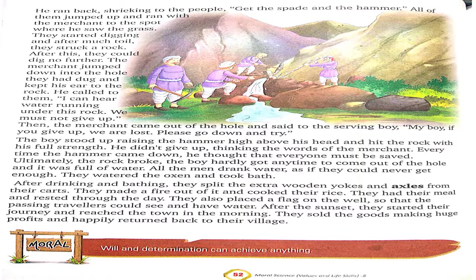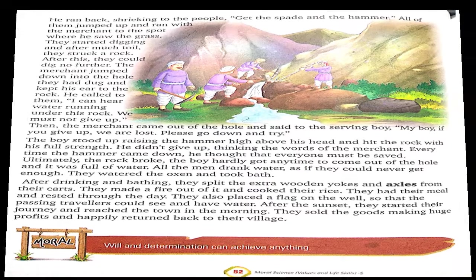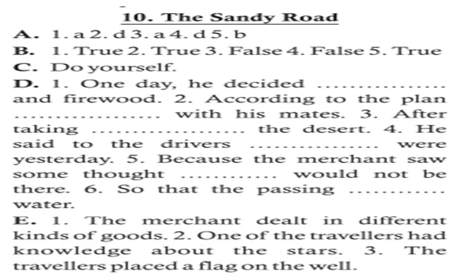So it was a very nice story — humein kabhi bhi umeed nahi chodni chahiye, ek aasha ki kiran apne paas hamesha rakhni chahiye. The moral of the story is: will and determination can achieve anything — agar aap apni ichha apne saath rakhenge aur dridh nishchay aapke saath rahega, to aapko koi bhi hara nahi sakta. Now from this page, you have to complete your copybook and the book work also. In the last page of your lesson there is an activity corner page — aap usko apni books mein complete karenge. Your work should be neat and clear, so that aapki har copy properly maintained honi chahiye.